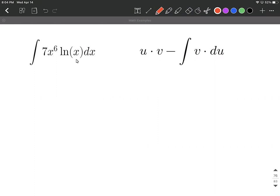With this technique, we have to identify both a u and a dv. So the general rule that we tend to go with is if you have a natural log, you're going to use that as your u. So we're going to go natural log of x will be our u, and then everything else is going to be our dv. So in this case, we're going to say 7x to the 6th dx will be our dv.